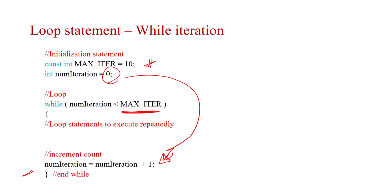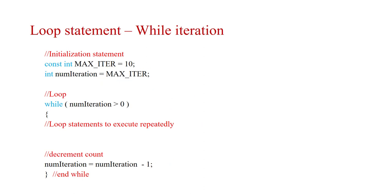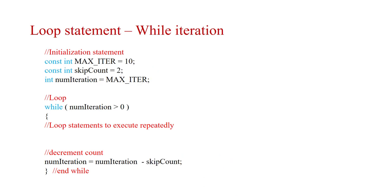When dealing with loops you have two approaches: start with a counter at zero and increment up to the maximum, or start at the maximum and decrement down to zero. You can also control the step count — instead of going 10, 9, 8 you could go 10, 8, 6 — whatever step size you want.